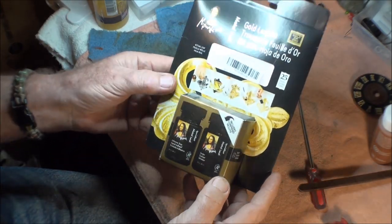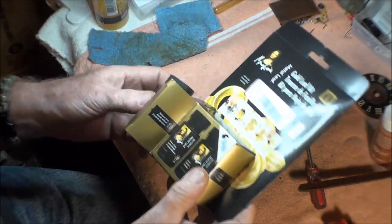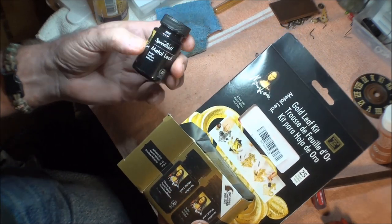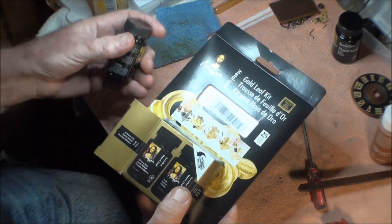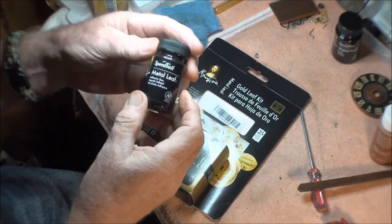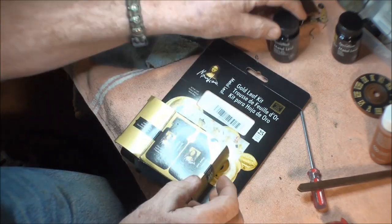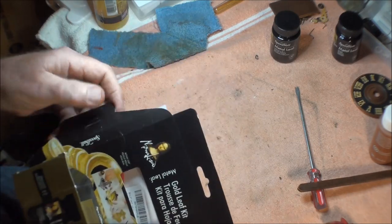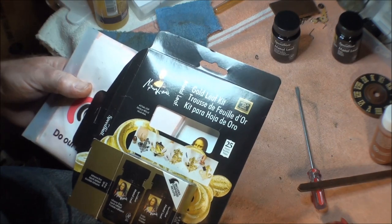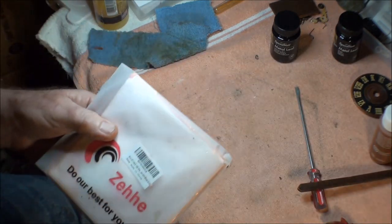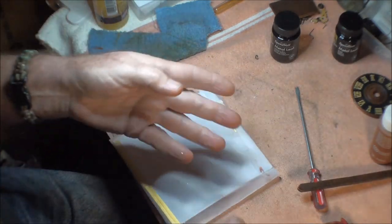So let's start with this metal leafing. This is a kit I bought. This has a sealer, which normally I don't use when I do the clocks. I use a matte finish spray. And this here is the adhesive.